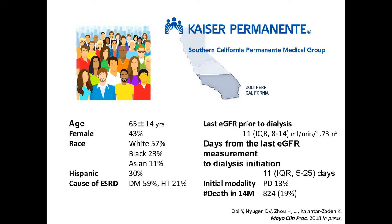The VA cohort had unique characteristics — those veterans were predominantly male and non-Hispanic white or black, having served in the US military with regular health checkups. Although the KPSC cohort had a smaller sample size, it was based on the most populous mega-region in California and held an adequate sample size with racial, ethnic, and gender diversity. We then merged pre-dialysis data in those cohorts with post-dialysis data derived from the US Renal Data System.